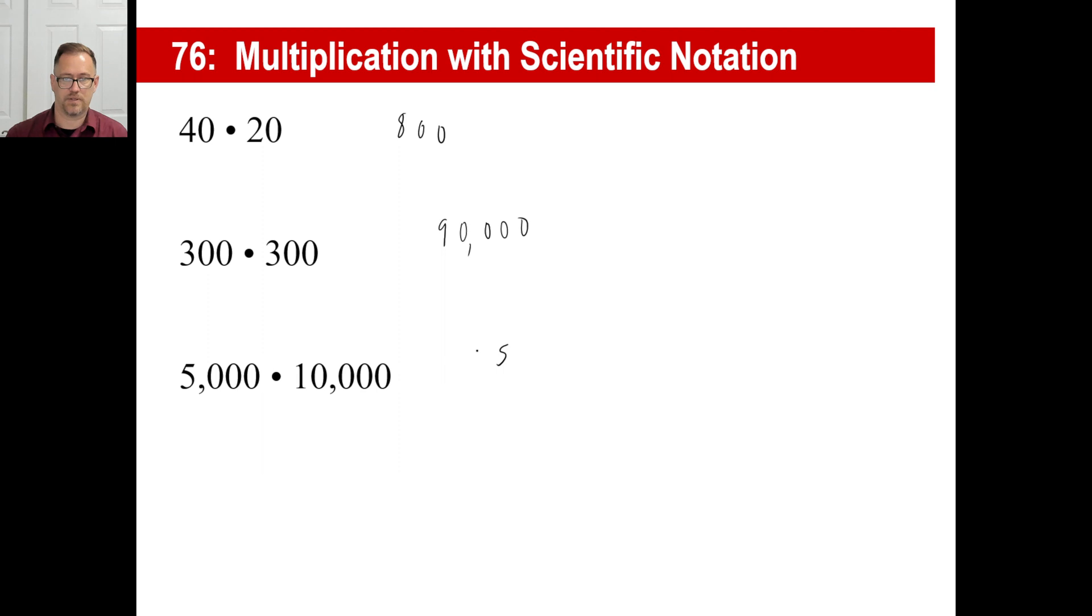How about this one? 5,000 times 10,000. 5 times 1 is 5. 1, 2, 3, 4, 5, 6, 7. And that answer is 50 million, which is about how much money I make in about a year and a half. It takes me a couple of years to make that.